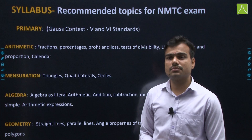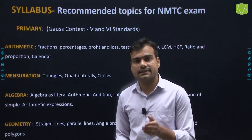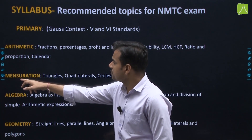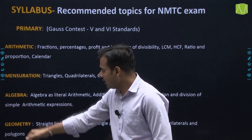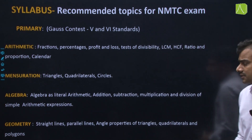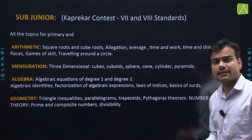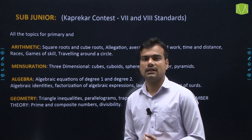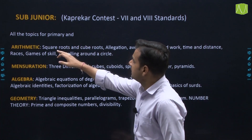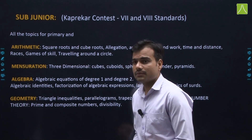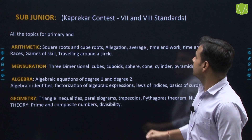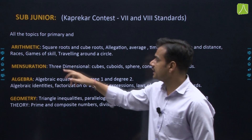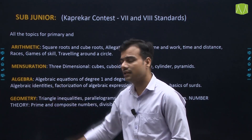Now let's talk about the syllabus. For the Primary level (6th class students), the syllabus covers arithmetic, mensuration, algebra, and geometry — these five types of topics. For the Sub-Junior exam (7th to 8th standard students), the syllabus similarly includes arithmetic, mensuration, algebra, and geometry.